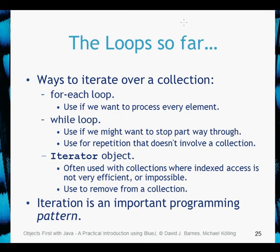So, the loops so far: we have covered foreach loop, while loop, and iterators. The foreach loop is very useful if you want to process and do something to every element. The while loop is good if we want to do some searches and stop partway through, and also very good for program-based repetition outside of collections. The iterator is very useful for collections which don't have indexes, and mainly the iterator object is used for removing a specific object from a collection. It's a pretty important programming pattern, so good to get the hang of.